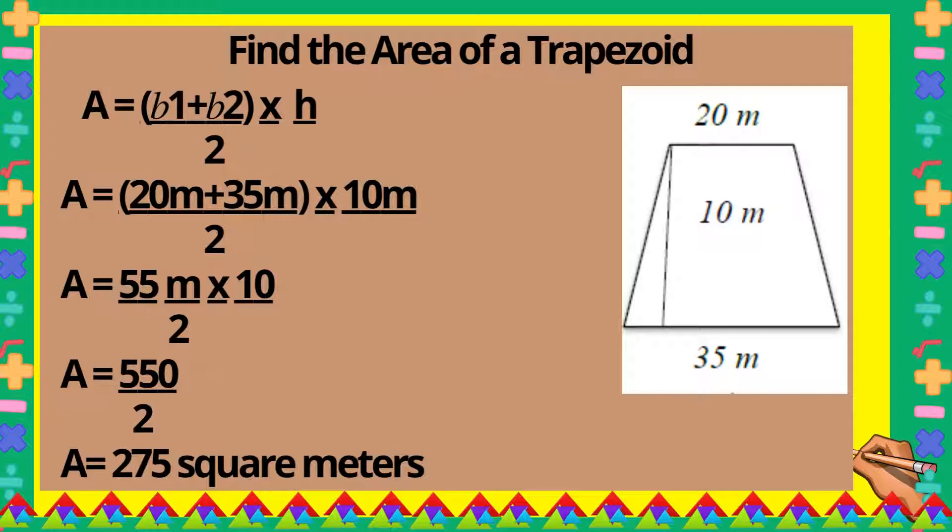This equals 550 divided by 2, so our area should be 275 square meters.